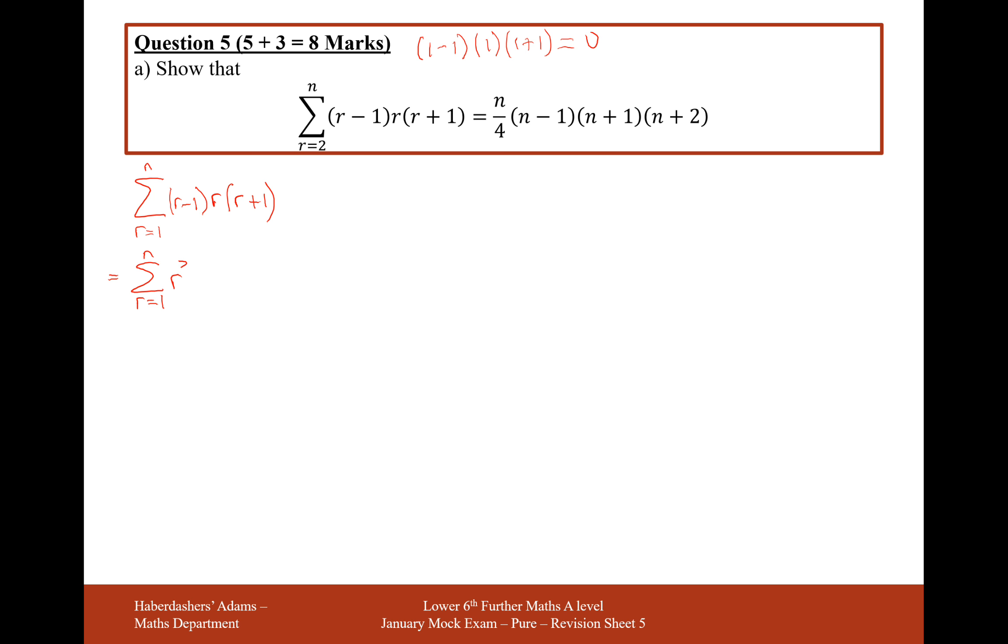So I believe after this I get r cubed minus r. And then I'm going to split up the summations into two different parts. The summation of the r cubed numbers and the summation of the r numbers. And here's where I now bring in my formulas that will help me get towards this stage here.